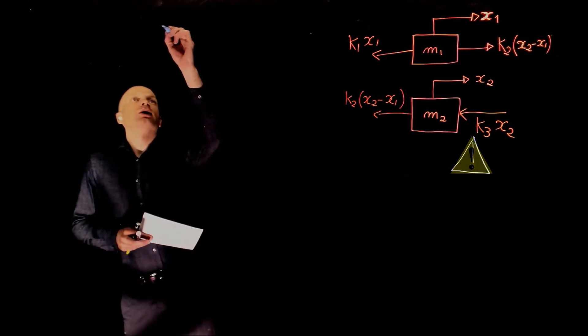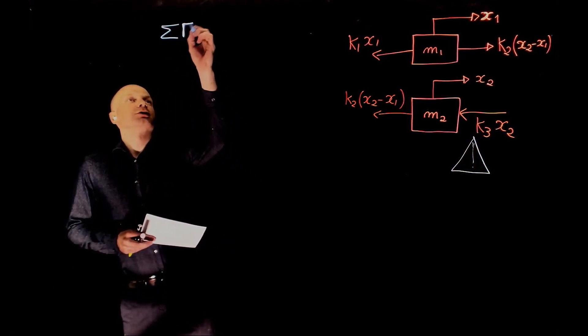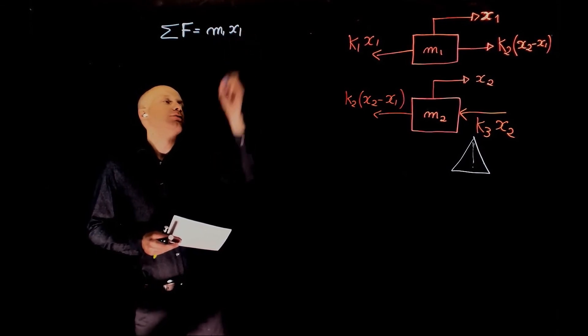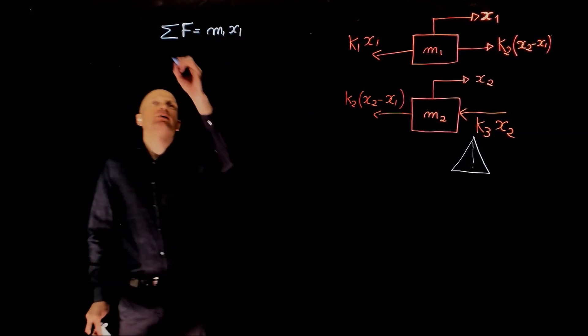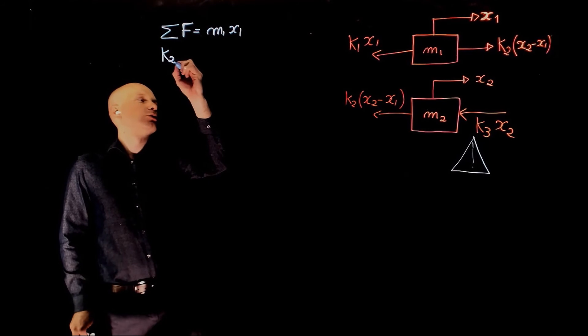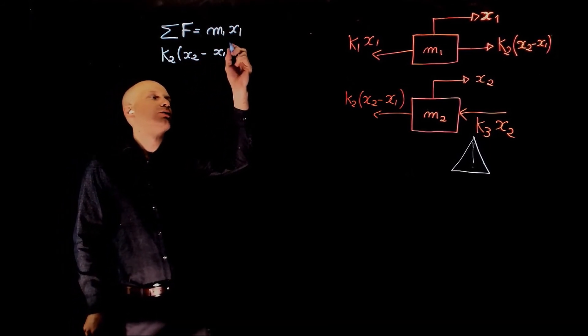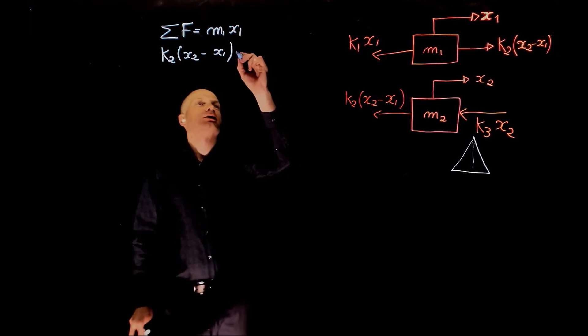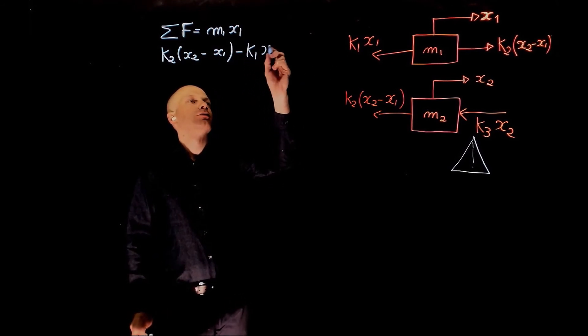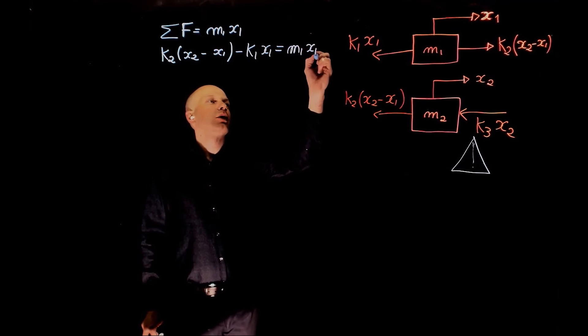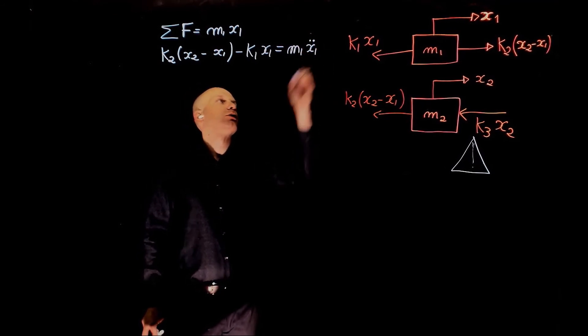Now for mass 1, we have sum of forces equals to m1 x1 double dot. What do you have there, we have k2 x2 minus x1 minus k1 x1 equals to m1 x1 double dot.